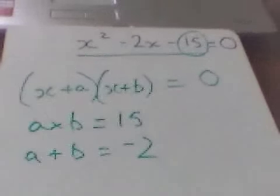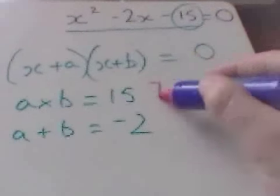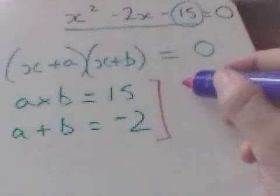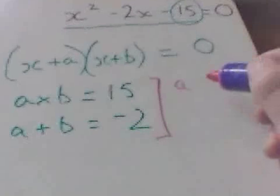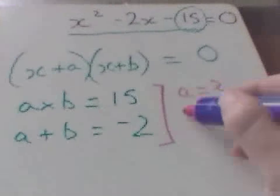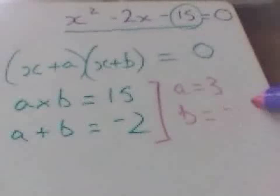From what we've done already, I know you can work this out. But that should be A equals 3 and B equals minus 5.